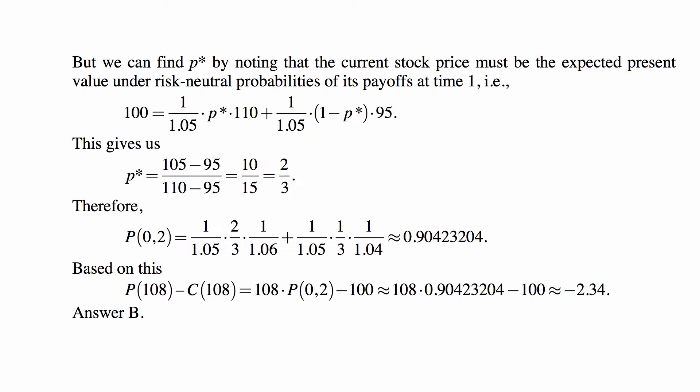So then we plug that into the formula, which says that put minus call is present value of exercise price minus the stock price. We just plug in the present value factor, which is the price of a zero coupon bond, and we get the answer, negative 2.34, and that's answer B.